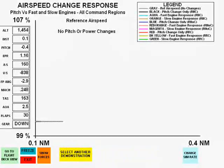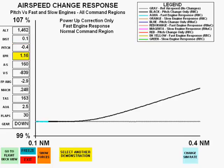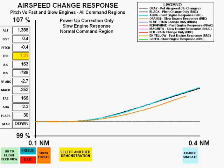This first plot shows no pitch or power changes. Next is a pitch-down correction in the normal command region. Next is a power-up correction in the normal command region for a fast-responding engine. And here is a power-up correction for a slow-responding engine in the normal command region.